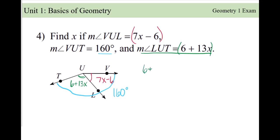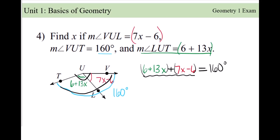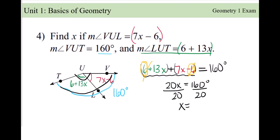We know the bigger angle is 160 degrees, so let's add the two smaller ones: 6 plus 13x plus 7x minus 6 equals 160. There's a positive 6 and a negative 6 on the same side — they cancel. So 13x plus 7x is 20x, and 20x equals 160. Divide both sides by 20: x equals 8. That's all they asked — find x — so we are done.